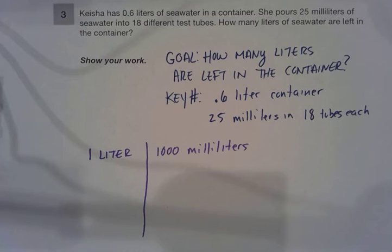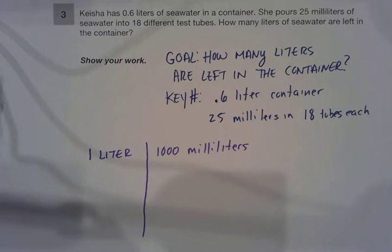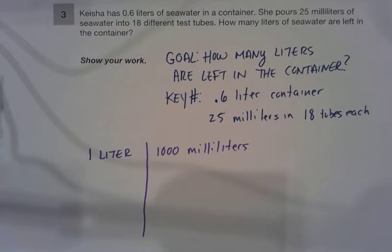Keisha has 0.6 liters of seawater in a container. She pours 25 milliliters of seawater into 18 different test tubes. How many liters of seawater are left in the container? Our goal is to find out how many liters are left, with our key numbers being 0.6 liter container and 25 milliliters in 18 tubes each.